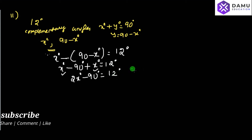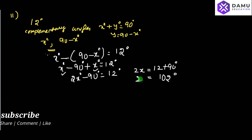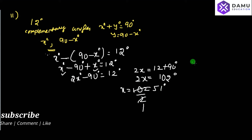Then, 2x will be equal to 12 plus 90 degrees, which is 102 degrees. So x will be equal to 102 divided by 2, which gives x equal to 51 degrees.